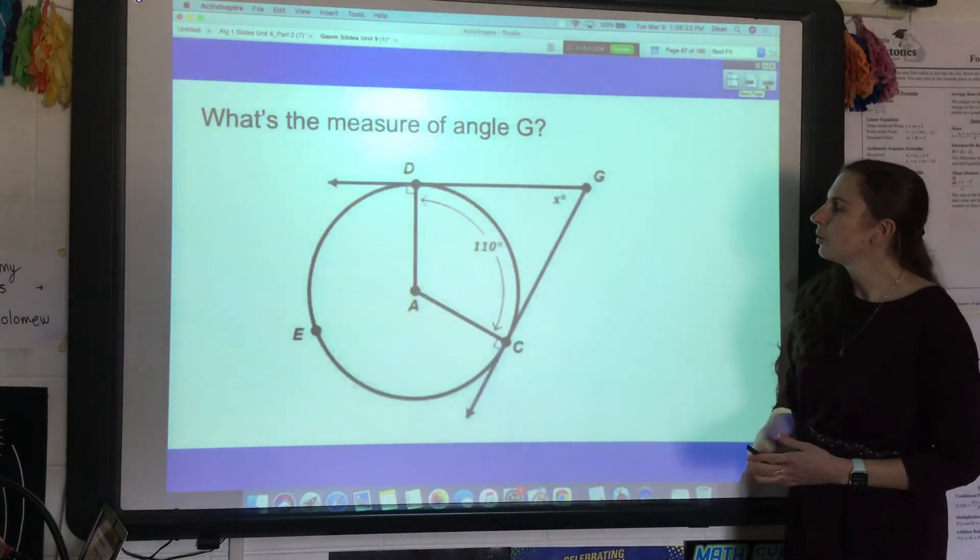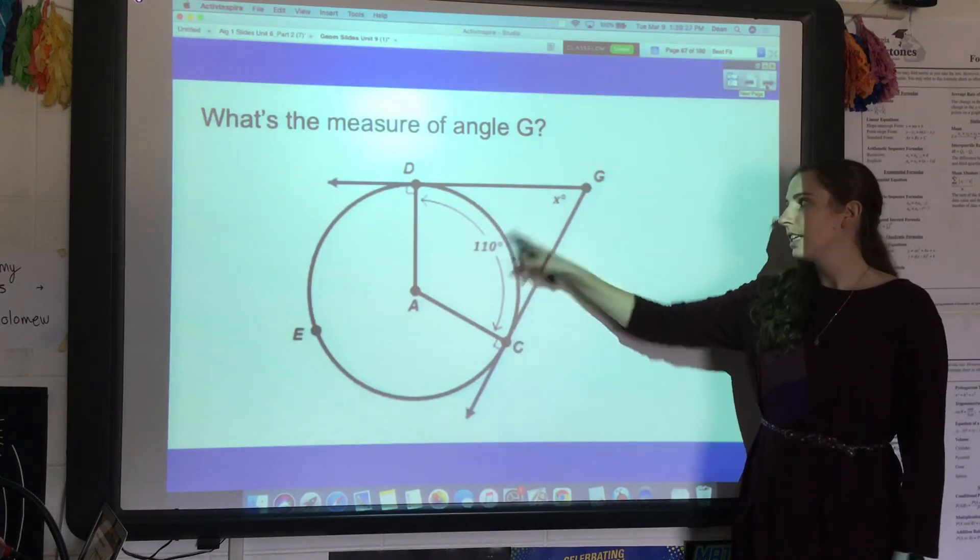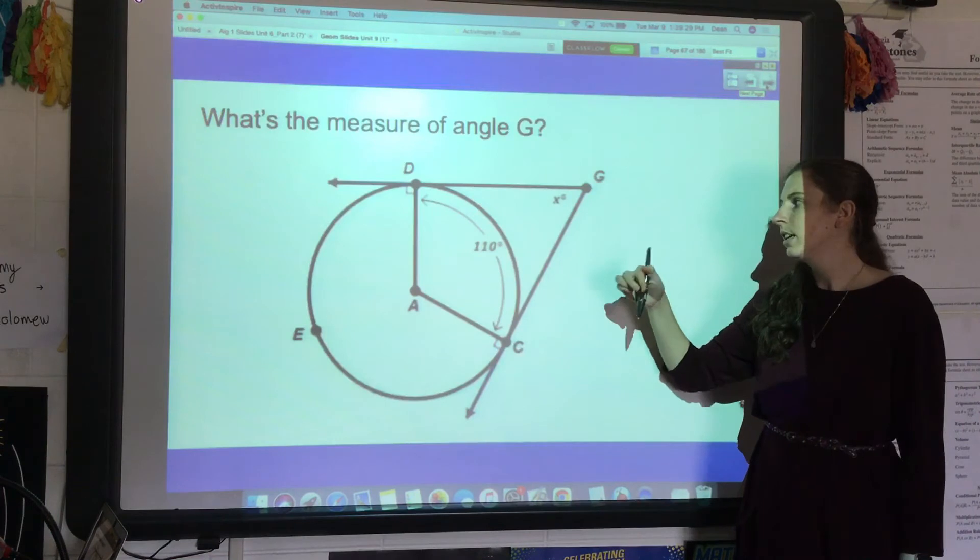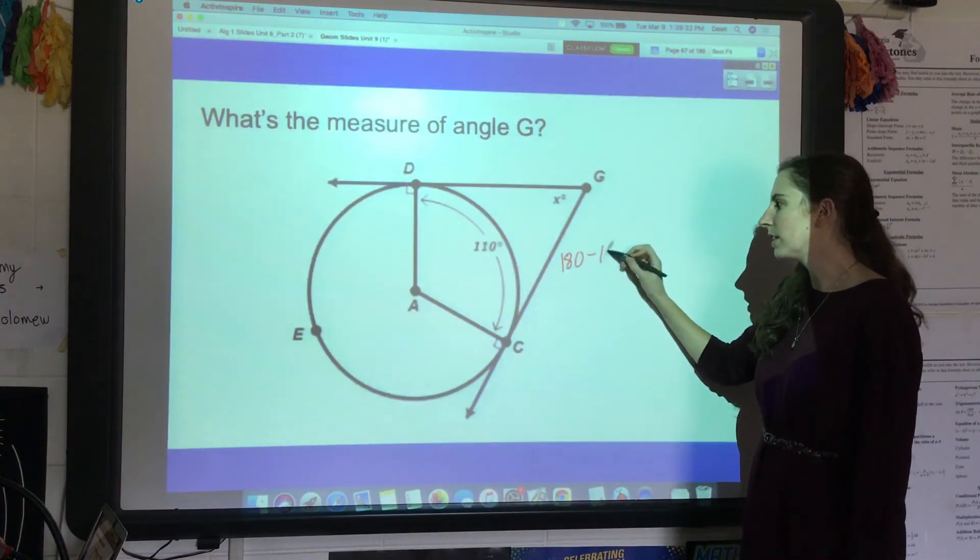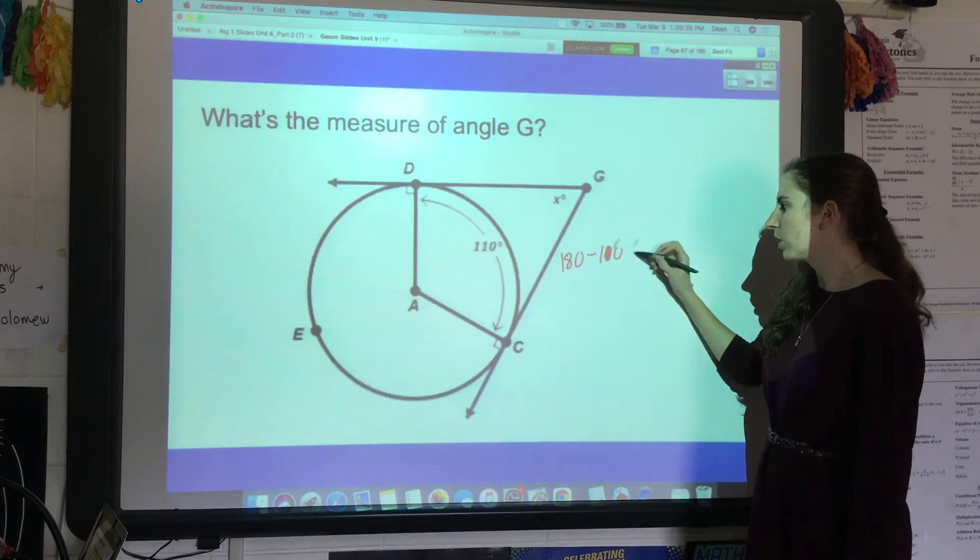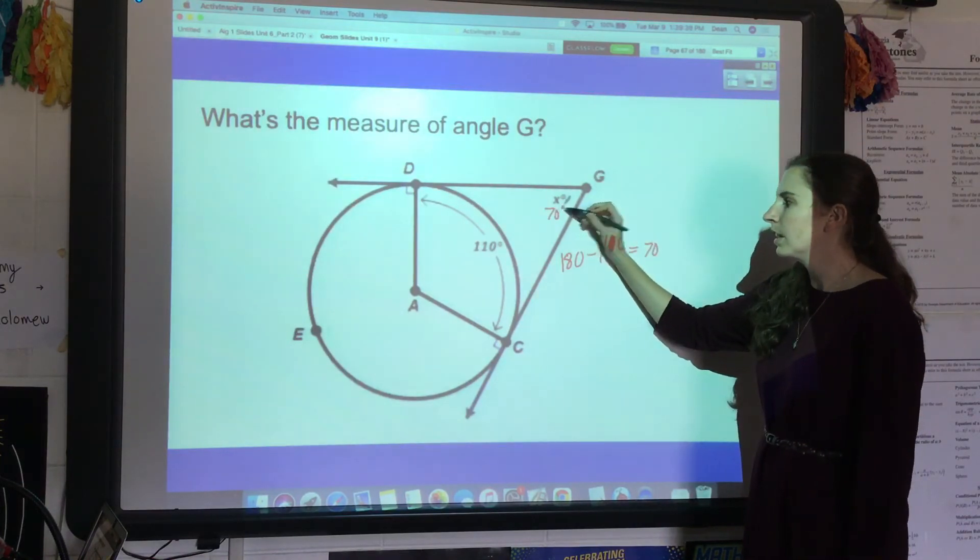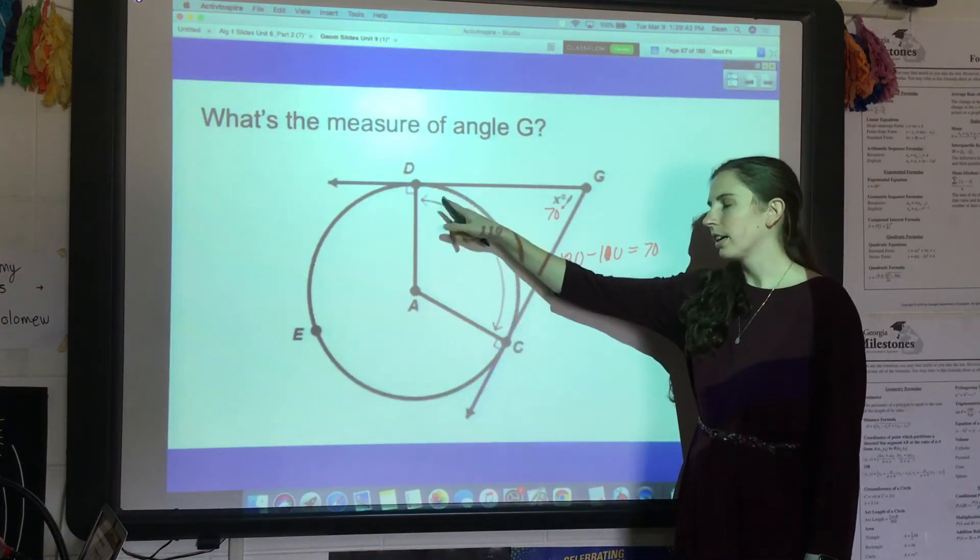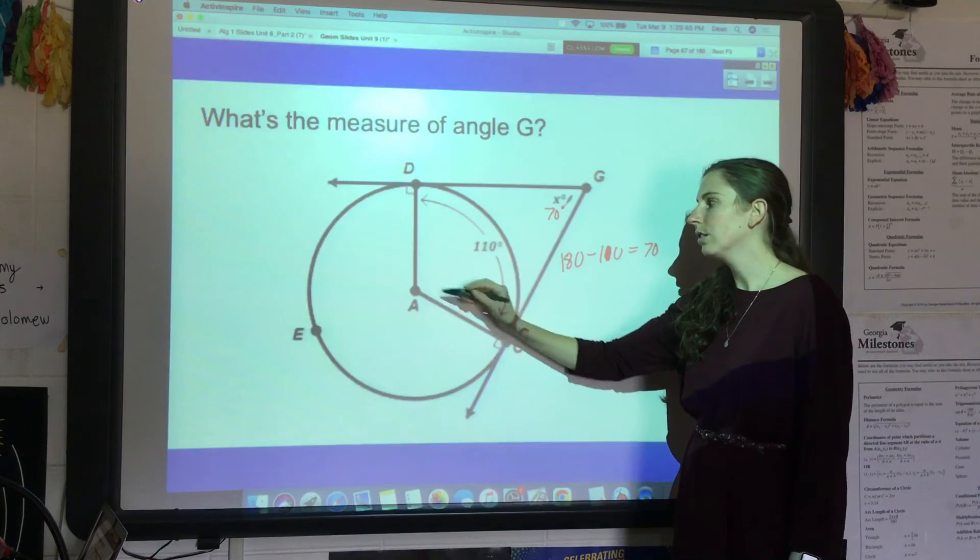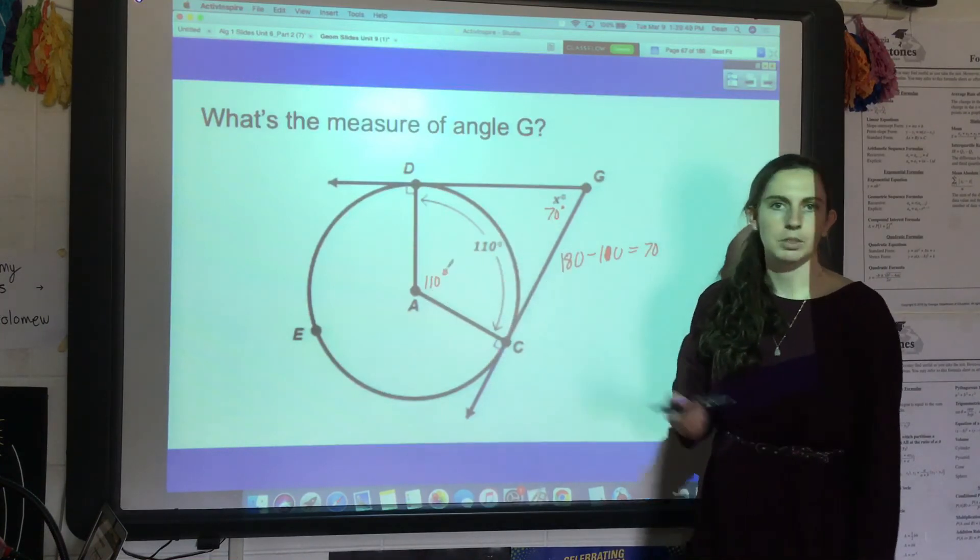So for example, what's the measure of angle X? All I need to do is—these two should add up to 180—so just do 180 minus 110 and you would get 70. Just to be clear, that's because this arc here is the same as the central angle, so it's 110, and then these two also should add up to 180.